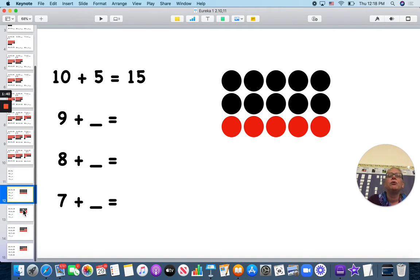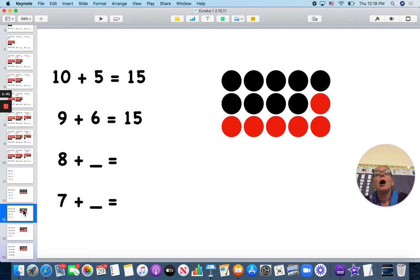So that's what happens when we do 9. I'm going to change one of those black ones to red, and now I have 9 plus 6 is 15. Can you think of what we're going to do to change the problem to be an 8 plus number? I'm going to keep the same number of counters.